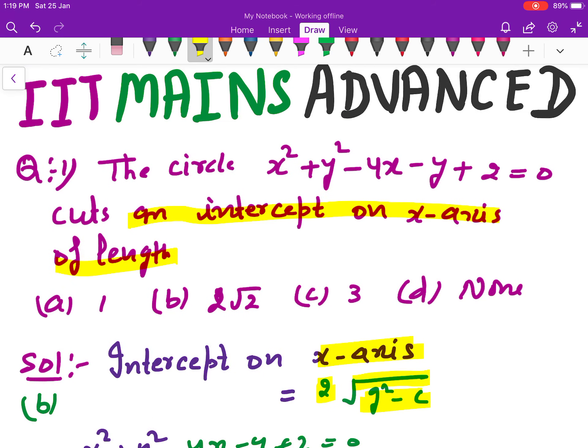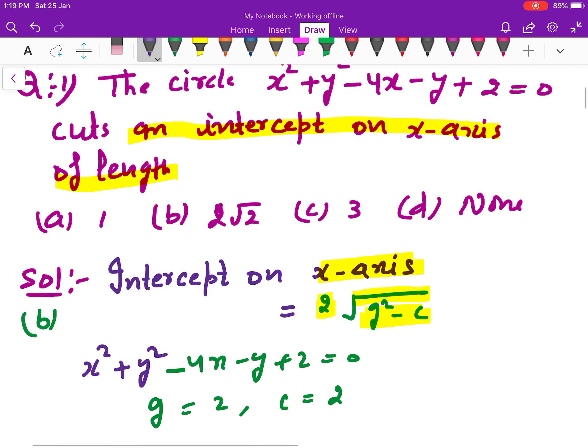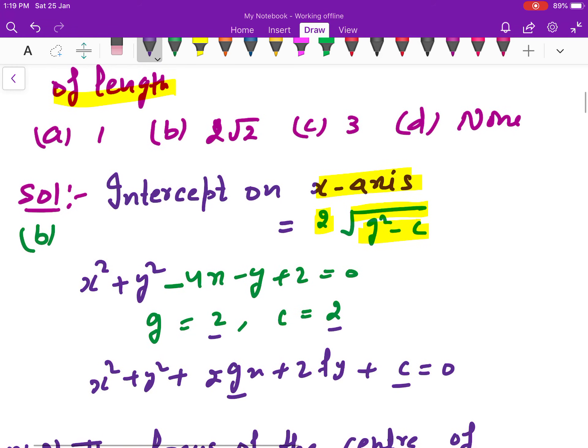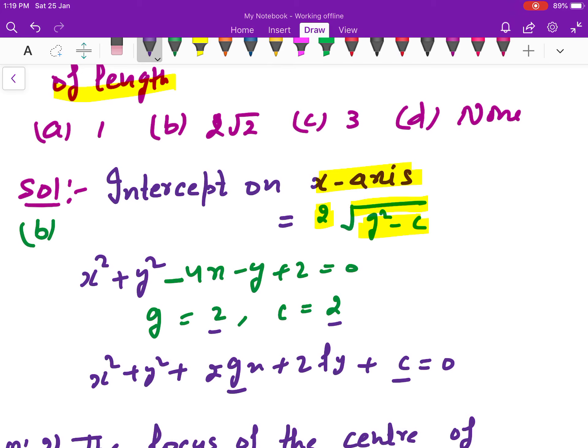This will be twice into under root g square minus c. The given equation is x² + y² + 2gx + 2fy + c = 0. Simply take the values of g and c as 2 and 2 and put them. This will be 2 into √(4 - 2), that is 2√2.